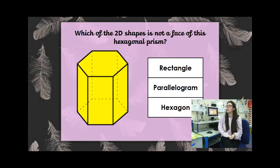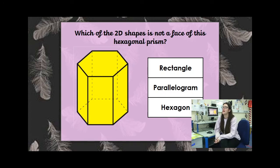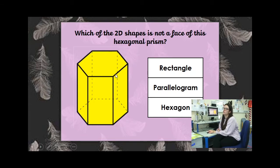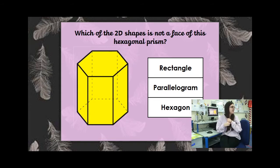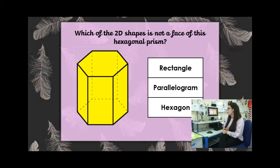Hands up — which of the 2D shapes is NOT a face of this hexagonal prism? We know it's a hexagonal prism because this face has one, two, three, four, five, six edges — hexagons have six sides. So which 2D shape can you not see? Have we got rectangles? Parallelograms? Hexagons? Which shape would you say you can't see? The parallelogram — good girl!